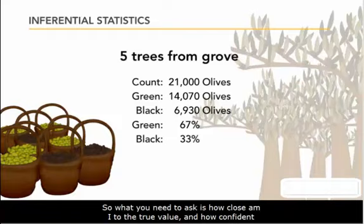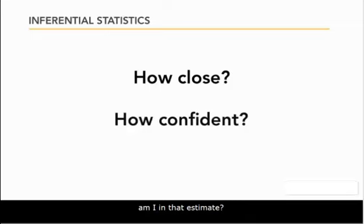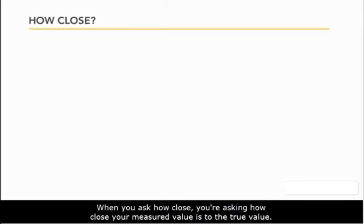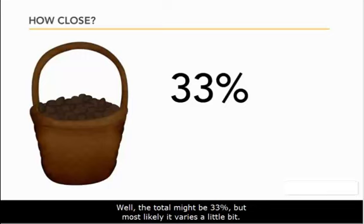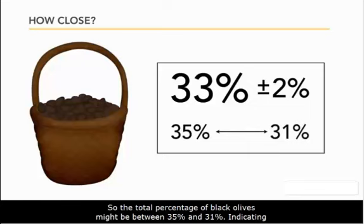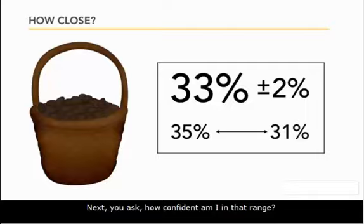So what you need to ask is: how close am I to the true value, and how confident am I in that estimate? When you ask how close, you're asking how close your measured value is to the true value. For example, black olives make up 33% of your sample, but the total might vary a little bit — it might be 33% plus or minus 2%, so the total percentage of black olives might be between 31% and 35%. Indicating how close gives you a range.